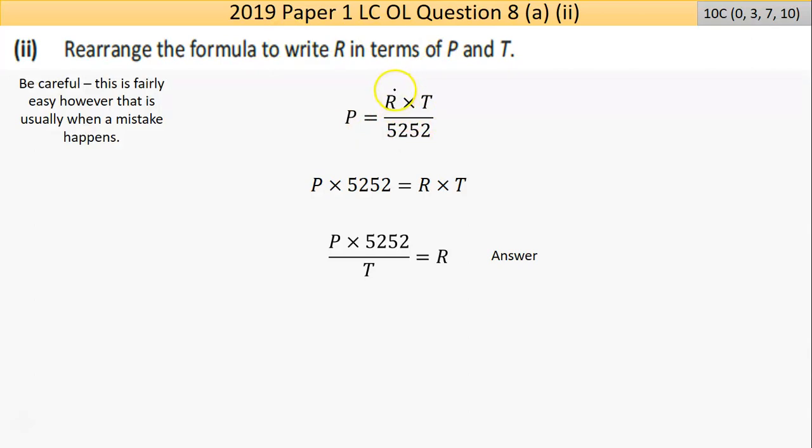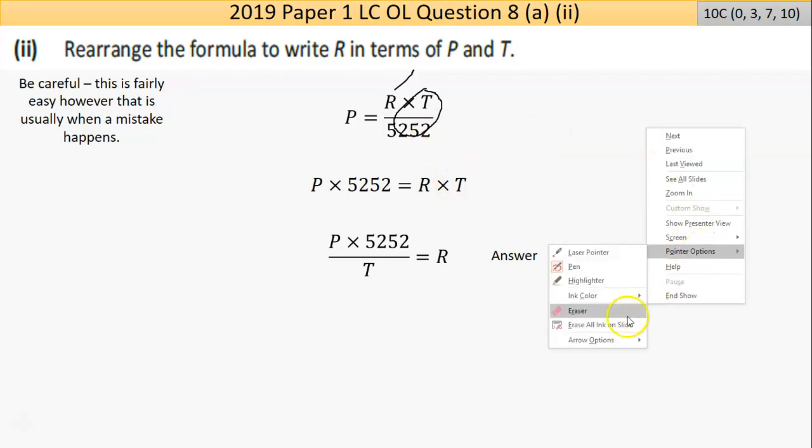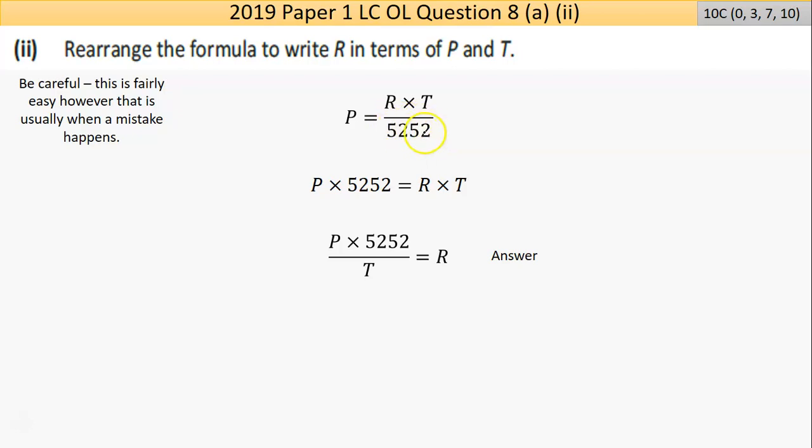The formula here is the one we're given in the question. So you're looking to rearrange, R should stay where it is, and everything else should move to the other side. So how you do that is the trick. The first I'm going to move is this 5252. Always, as a rule, I will try to make things linear, as in remove fractions if possible. So if I bring the 5252 across the equal, and with dividing on the right, it will become multiplied on the left.